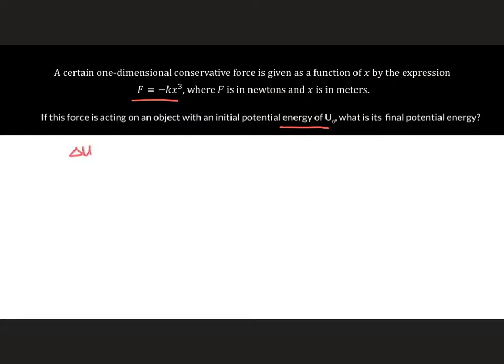So recall that delta U is equal to the negative of the integral of our force with respect to position from the initial position up to the final position. Also remember that our delta U is in fact equal to U final minus U initial, and we are given that our U initial is equal to U₀.